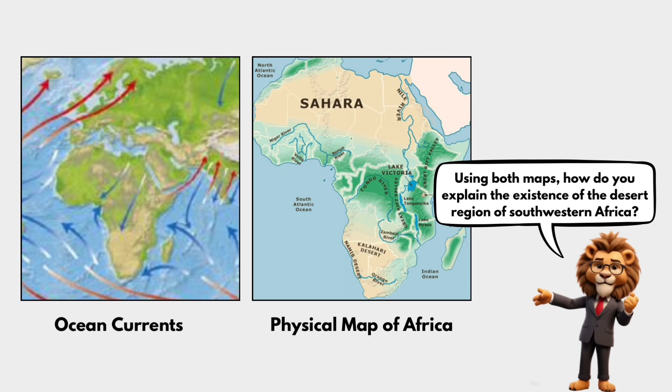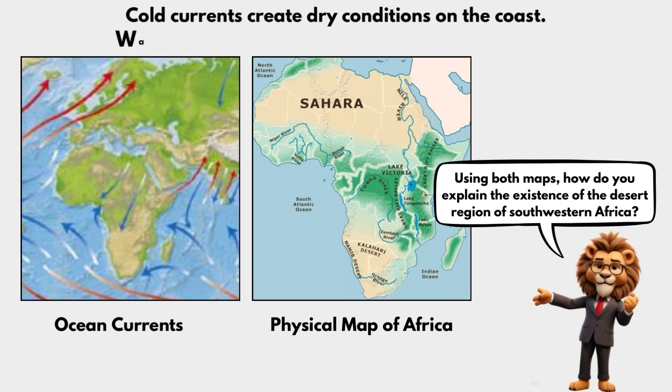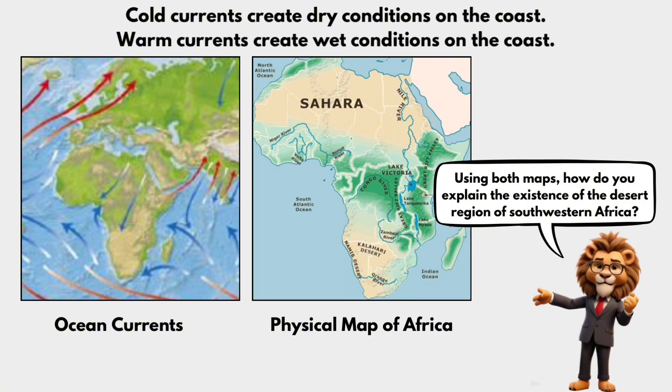So using both maps, how do you explain the existence of the desert region of southwestern Africa?